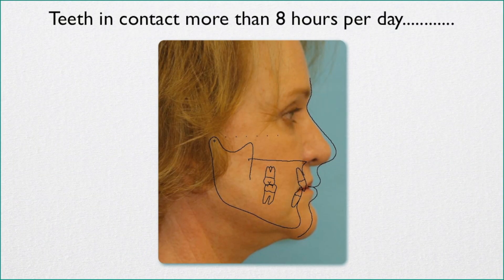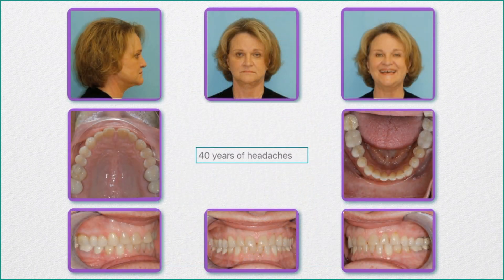Contrast that to somebody who clenches their teeth together for much of the day. You can actually see that the face height can be reduced. Here's such a woman, and her chin has come forward over the years because of the clenching, and her face height is reduced because of that. She is the exact opposite of Michael Phelps. You can see how her upper incisors have essentially disappeared up underneath her upper lip because of her clenching and moving the maxilla upward — the exact opposite of Michael Phelps.